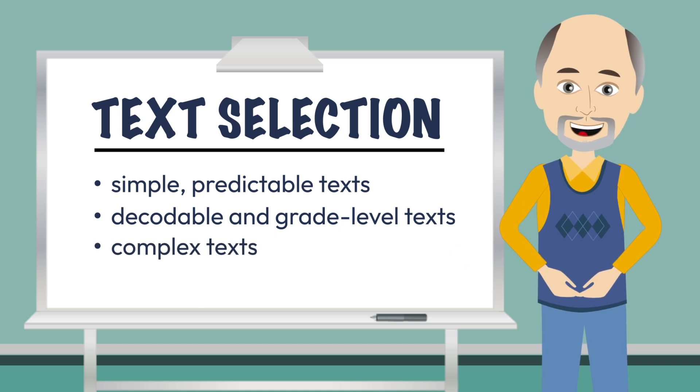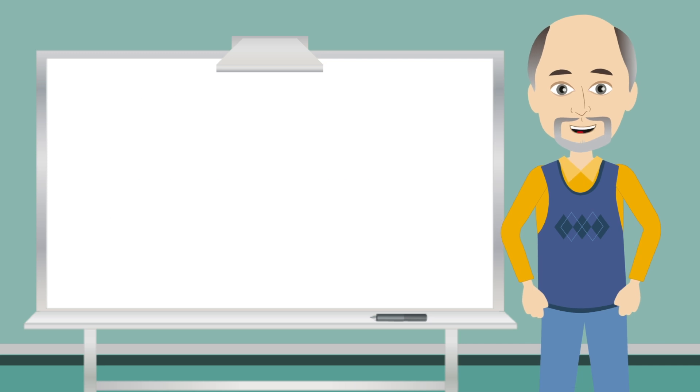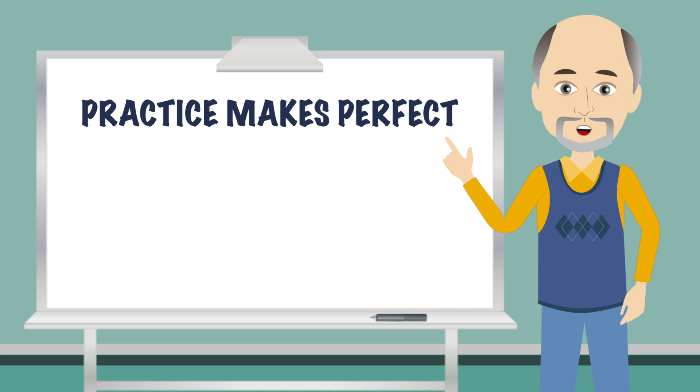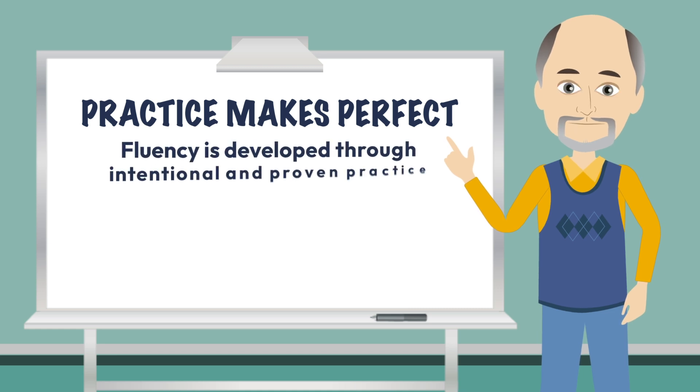As students evolve into fluent readers, move to more complex texts connected to skills and topics of study, and then to a variety of genres and interests. The lesson on fluency concluded with a section titled 'Practice Makes Perfect,' and it reiterated the fact that reading fluency is developed in the same way as most any other skill or craft.